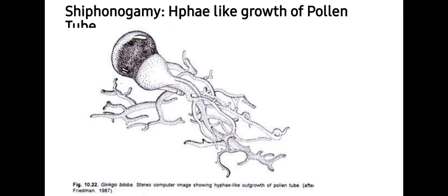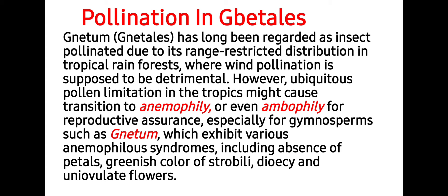In Ginkgoales, both zoidogamy and siphonogamy occur. The tube shows hypha-like growth of the pollen tube and it is multi-branched or haustorial in nature, which carries the mature male gametophyte to the female gametophyte to assist further fertilization and development of seed. That's all about pollination in Ginkgoales.